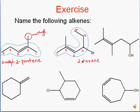The alkene is located at carbon 2. I have two other groups to account for: the bromo and the methyl. I list these in alphabetical order. The bromine is on carbon 4, so I say 4-bromo, then 2-methyl. So the whole name is 4-bromo-2-methyl-2-hexene.